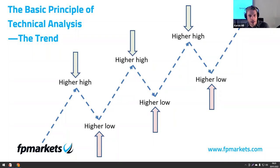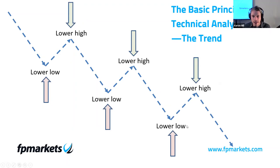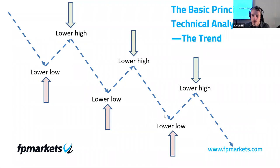Moving on — the same can be said obviously for a downtrend, which is formed by a series of lower highs and lower lows. I understand this is very basic and some of the traders here will be much more advanced. This is just for the beginner traders, recapping what we touched on in previous webinars. Let me emphasize that it's rarely as uniform as this on the live charts, but the gist is to look for clear swings on the chart, especially if you're a newer trader.